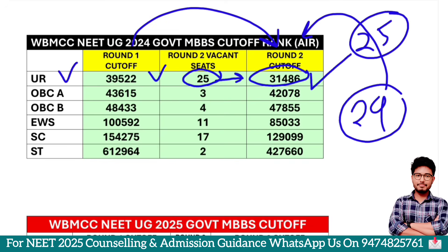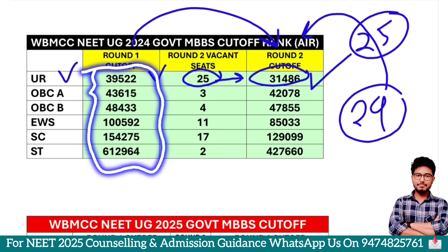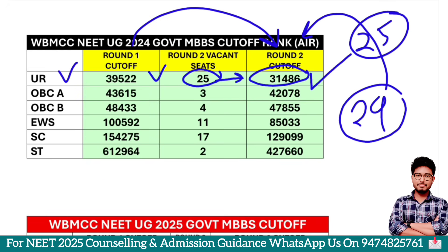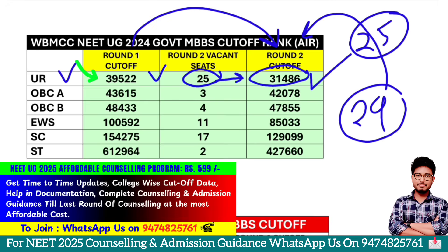I will talk about Fresh Registration candidates. I will talk about this Round 1 counseling. In 2024 Round 1 counseling, this cut-off rank is less than a candidate who is Fresh Registration. I will talk about 39,522 in Round 1 counseling. In this case, 39,522 is less than a candidate which is Fresh Registration. I will also talk about this cut-off in Round 2 counseling.